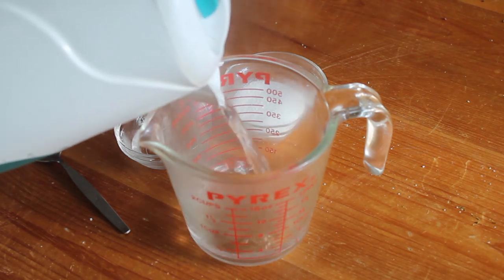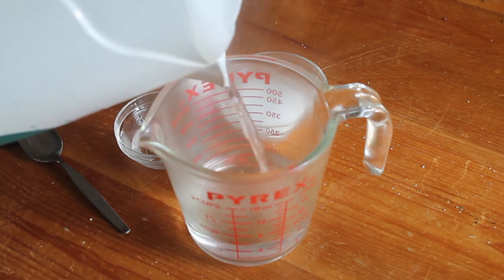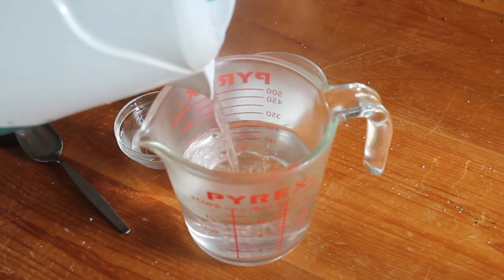To start off, you want to boil 1 and a half cups of water. This will make sure that your water is hot enough to dissolve all of your sugar.